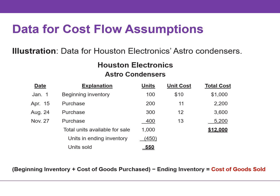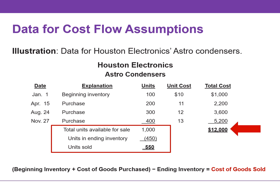Houston Electronics had a total of 1,000 units available to sell during the period, representing beginning inventory plus purchases. The total cost of 1,000 units is $12,000, which represents the cost of goods available for sale. A physical inventory taken at December 31st determined that there were 450 units in ending inventory.